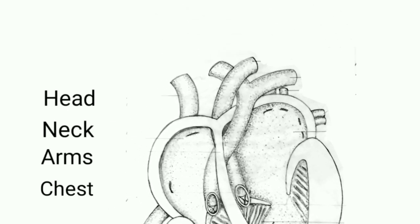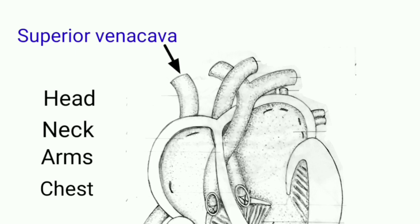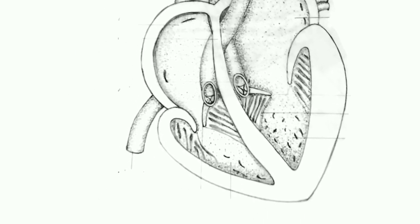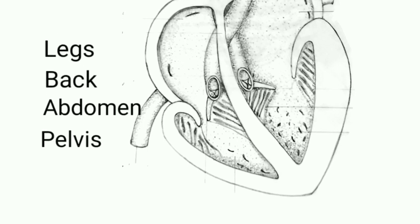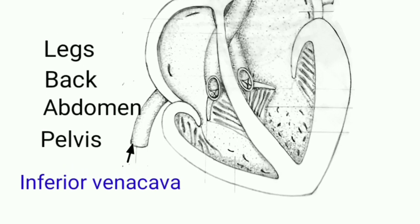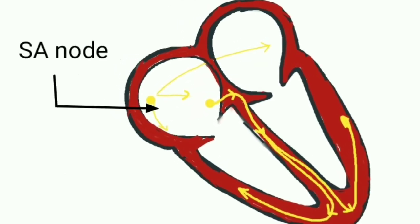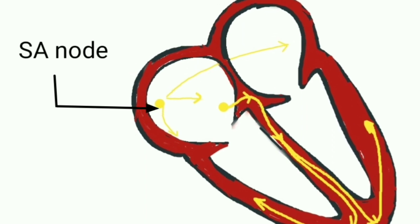Right atrium: the right atrium receives deoxygenated blood from the head, neck, arms, and chest via the major blood vessel known as the superior vena cava. Deoxygenated blood from the lower body, including legs, back, abdomen, and pelvis, is returned to the right atrium through the inferior vena cava. The natural pacemaker of the heart, the SA node, is located in the upper wall of the right atrium at the junction where the superior vena cava ends. This pacemaker cell can spontaneously generate electrical impulses.